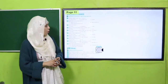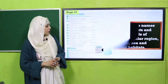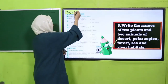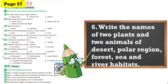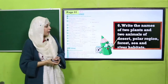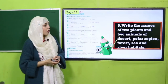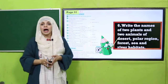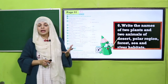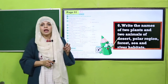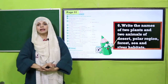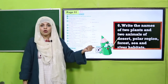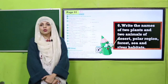Now is the time for your homework. Do question number six given on page number 98. The question says: write the names of two plants and two animals of desert, polar region, forest, sea, and river habitats. For each habitat, you have to write two animals and two plants. We have done this multiple times in the worksheet already, so you can use your notebook for this homework.